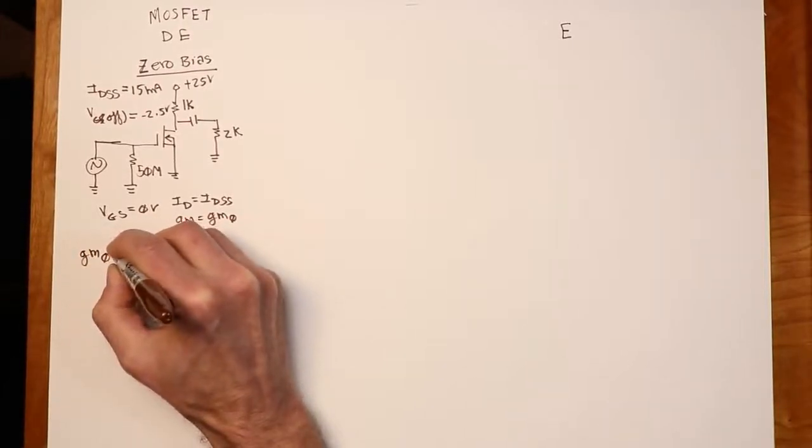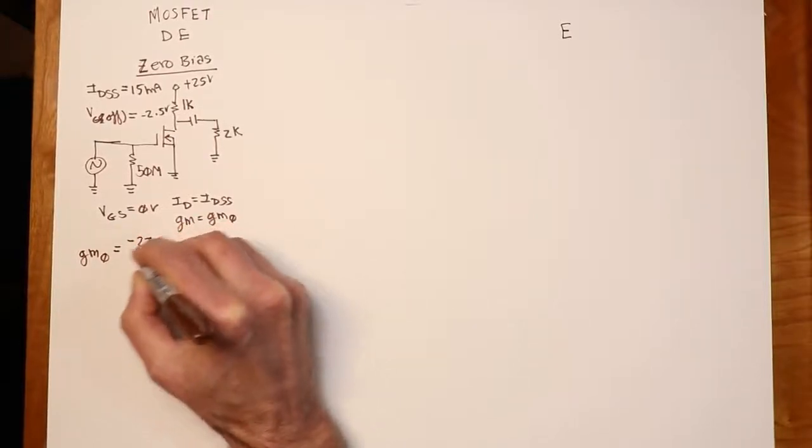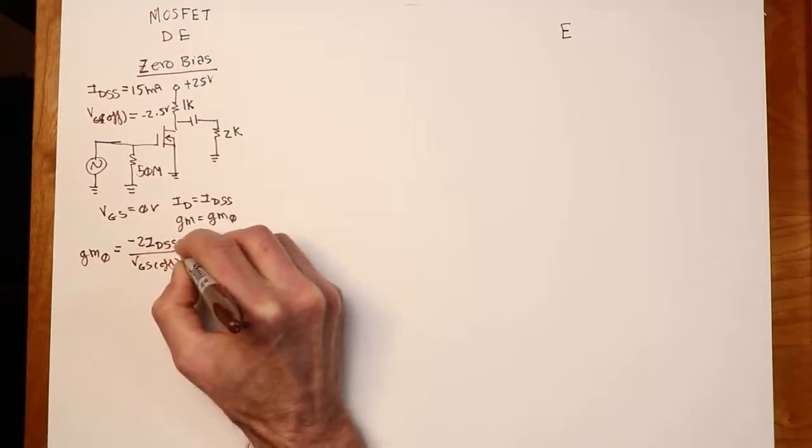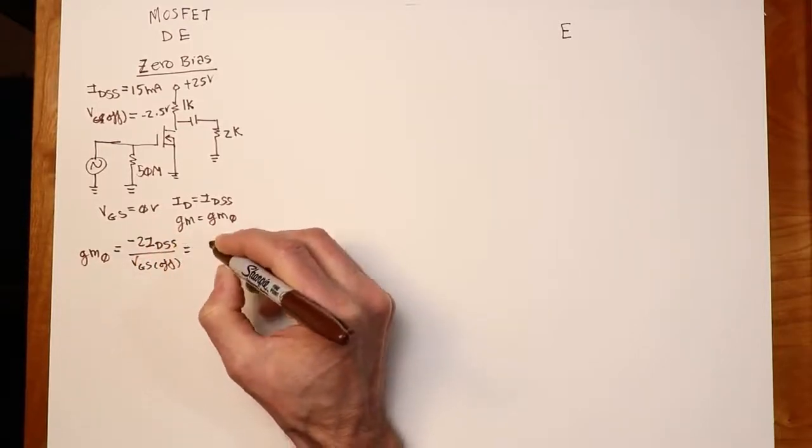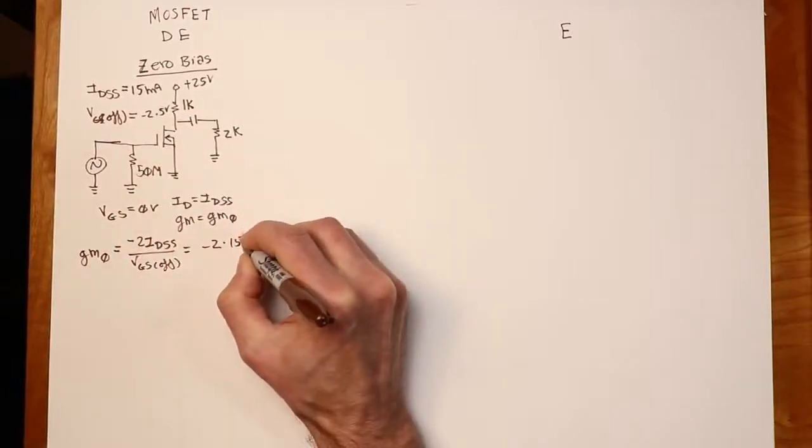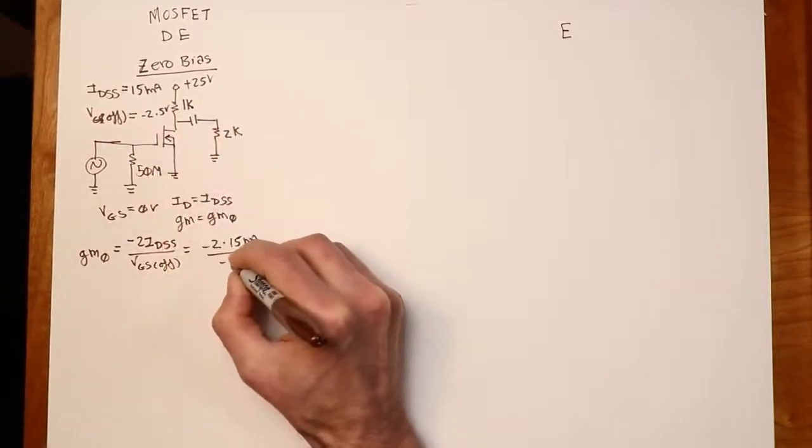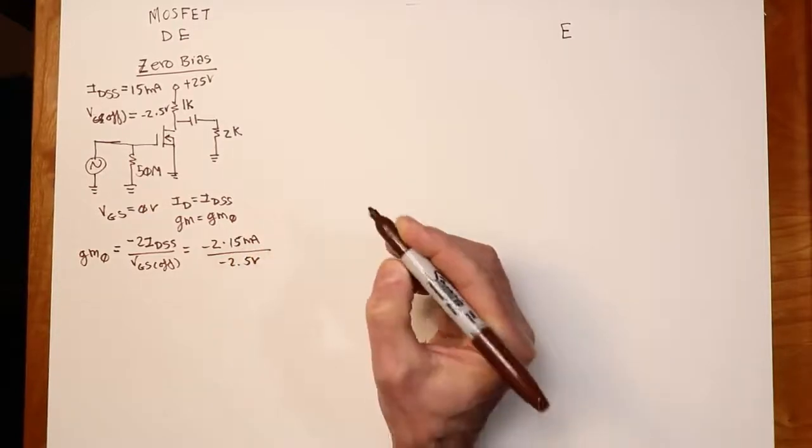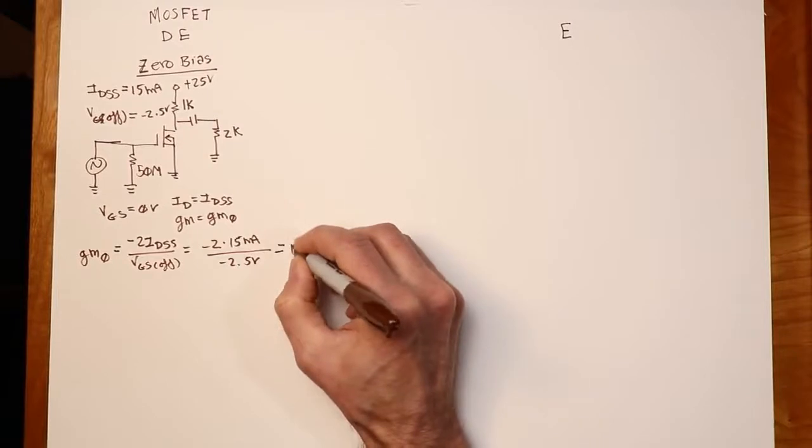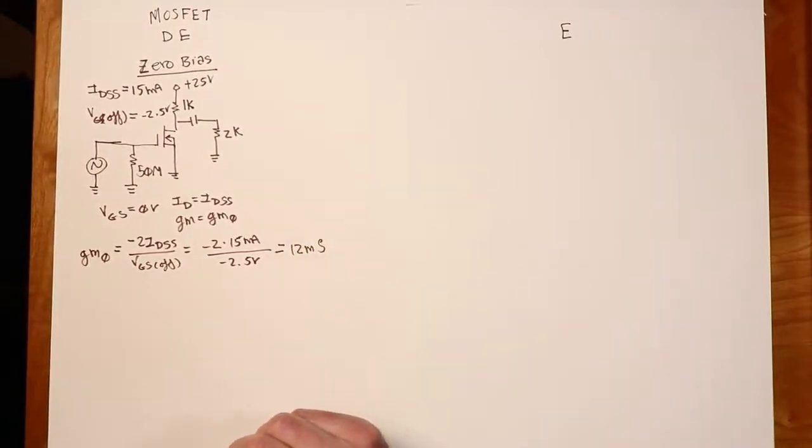So let's figure out what the GM zero is. That's, again, negative 2 IDSS over VGS off. And that's going to work out to negative 2 times 15 mils divided by the VGS off of negative 2.5. So that's going to work out to 12 millisiemens.